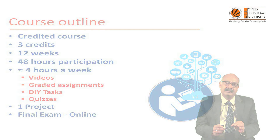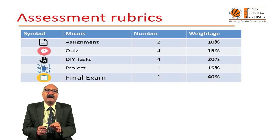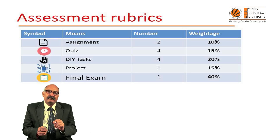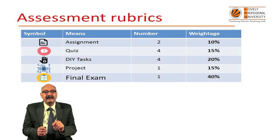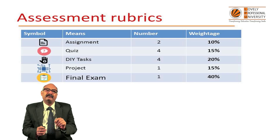The course also involves submitting a project and taking a final examination, which is online and multiple-choice question based. The rubrics are structured such that a learner will attempt two assignments comprising 10% of the weightage, four quizzes comprising 15%, four DIY tasks summing to 20%, a project worth 15%, and a final examination amounting to 40% of the total weightage.